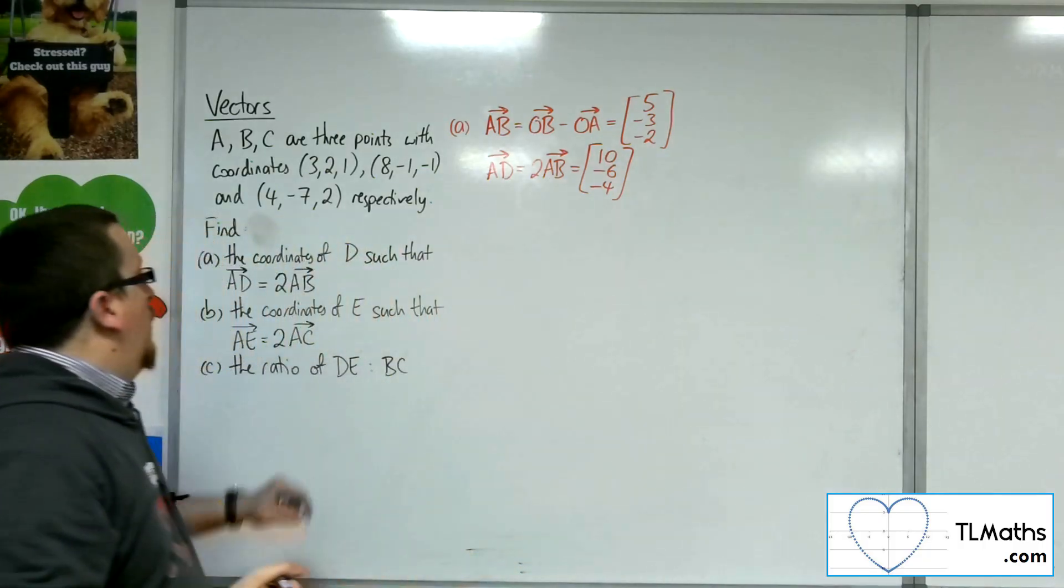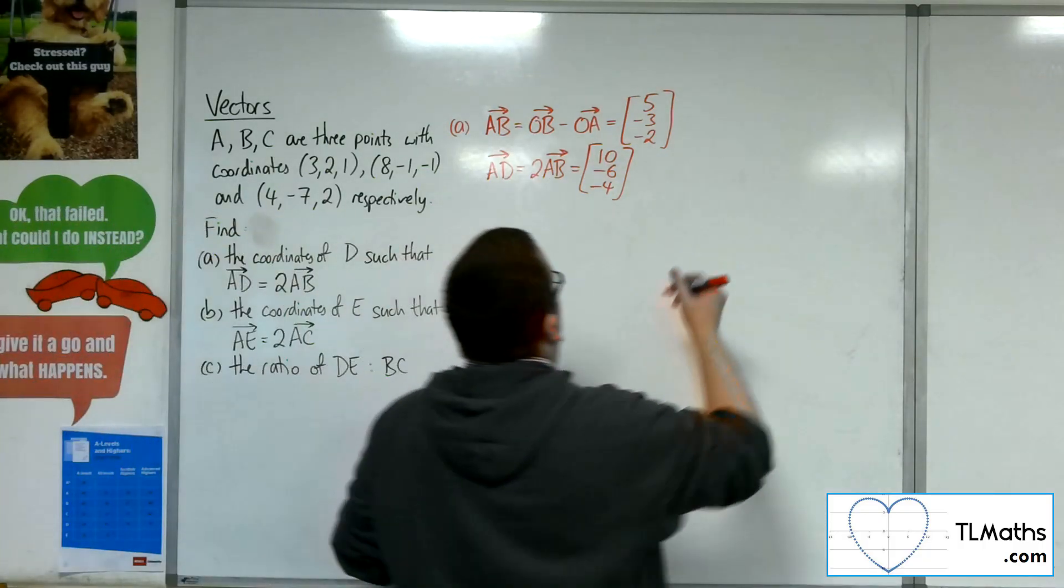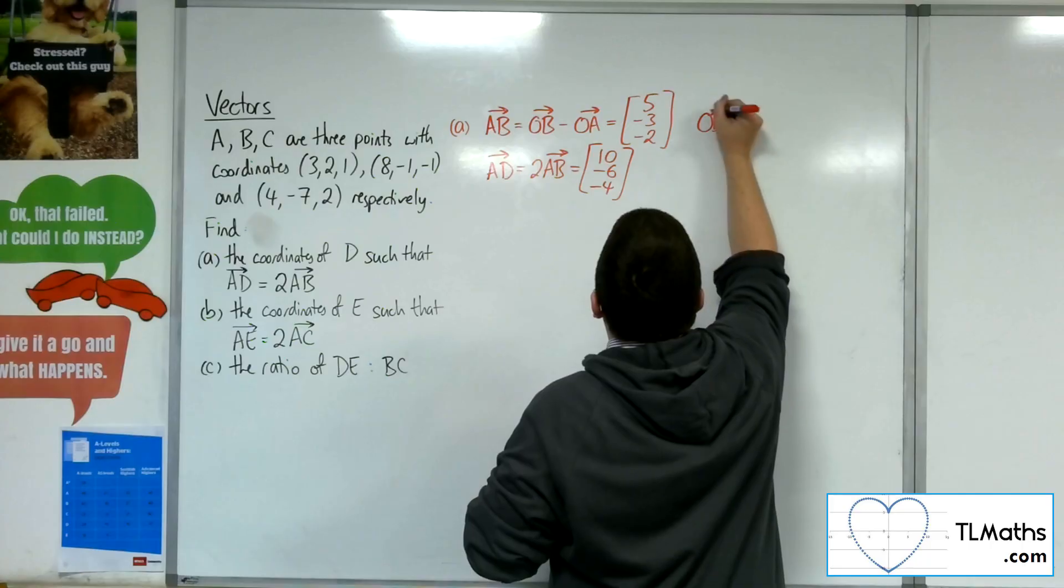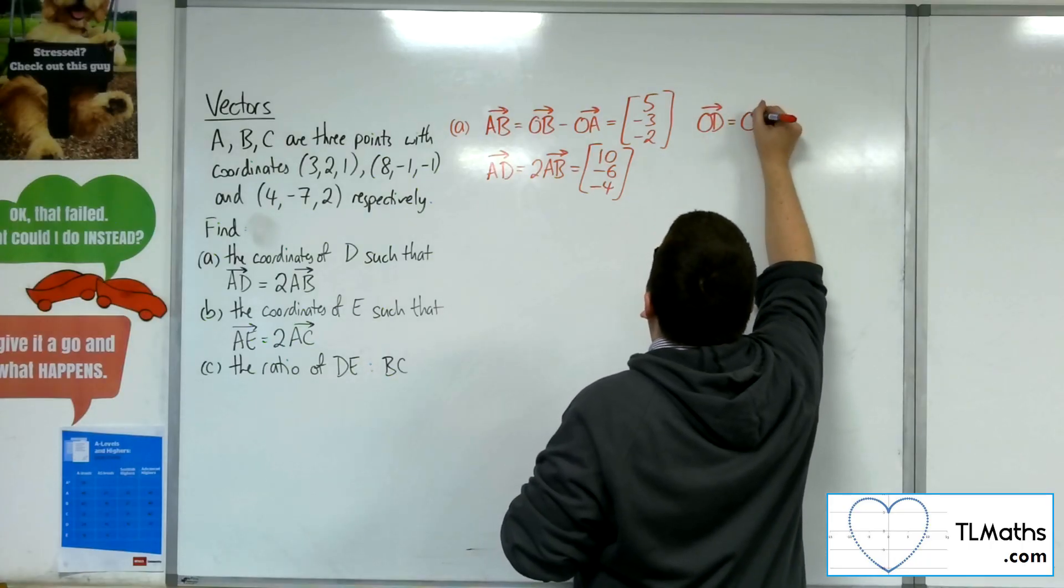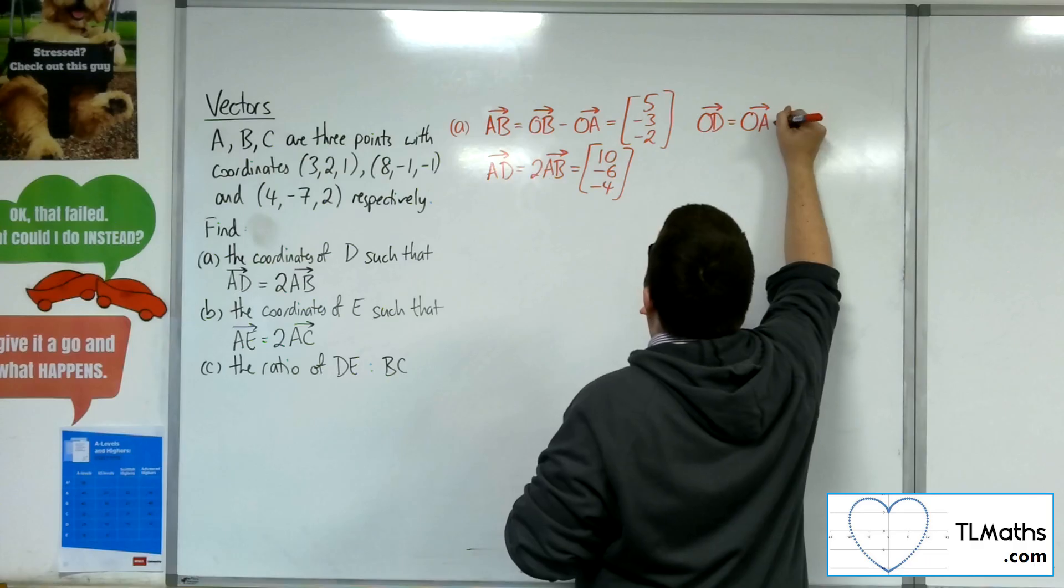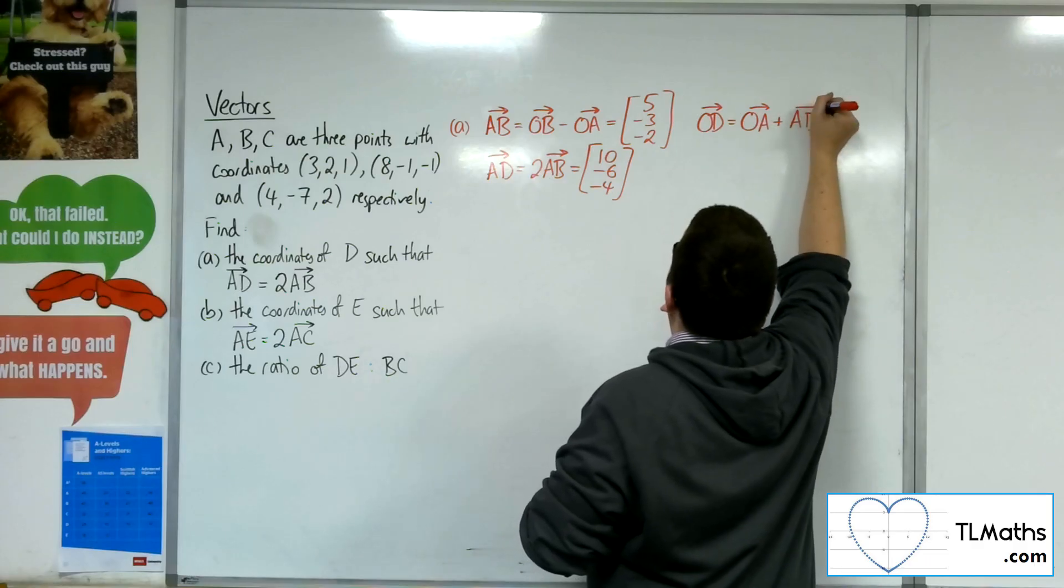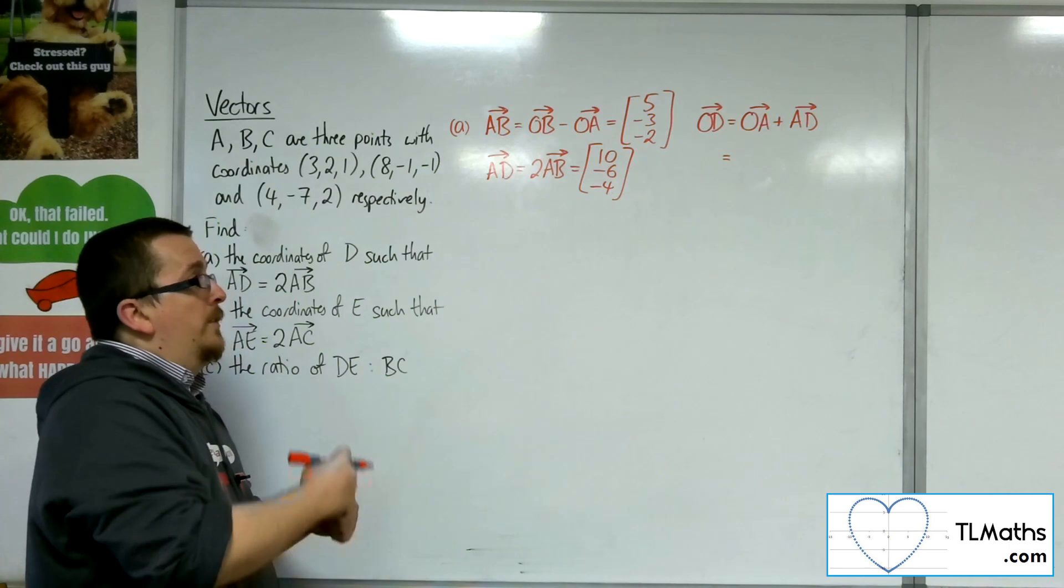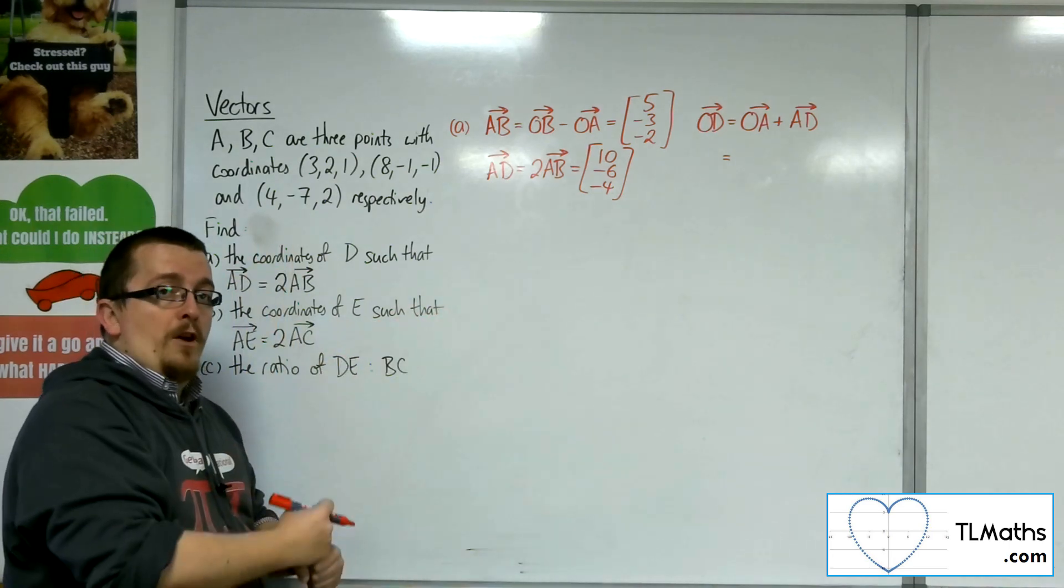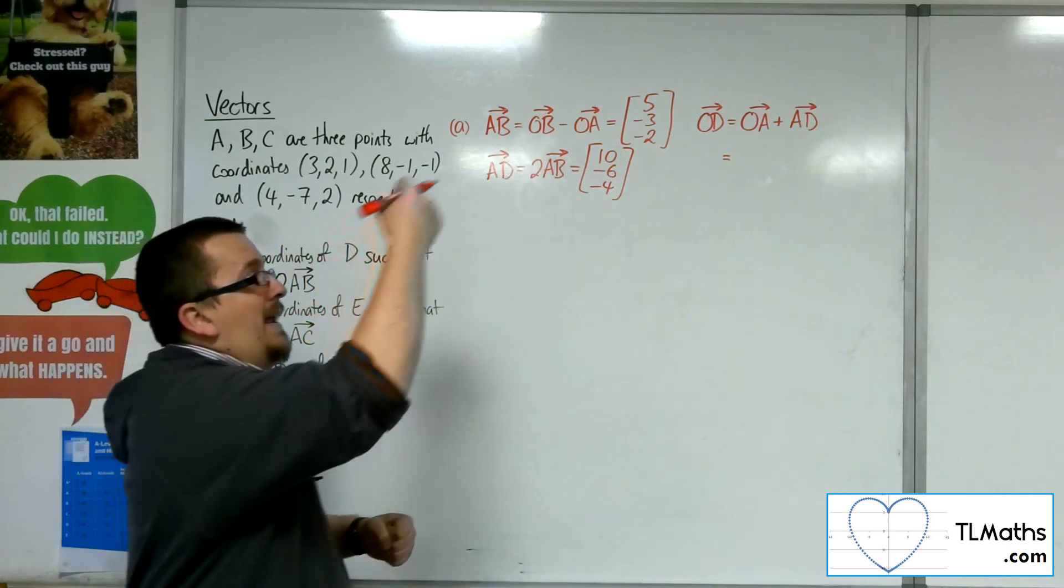So if I want the coordinates of D, then OD, the position vector of D, will be OA plus AD. So that will tell me how to get from the origin to D by going from the origin to A, and then from A to D.